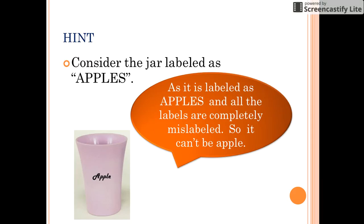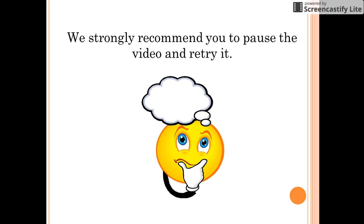Let me give you a hint. Consider the jar which is labeled as apple. Since we know that all the jars are mislabeled, this jar can be that of oranges or apples and oranges only. Try the puzzle again.